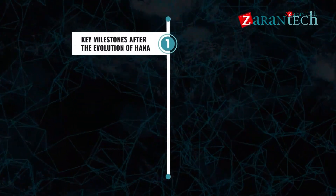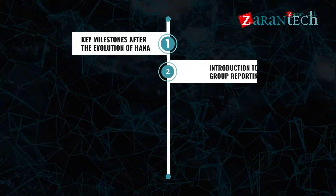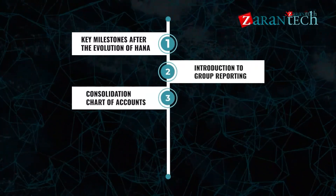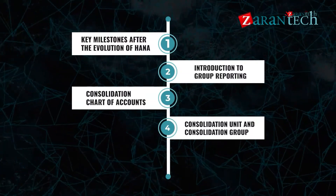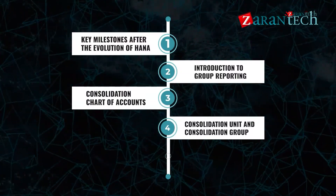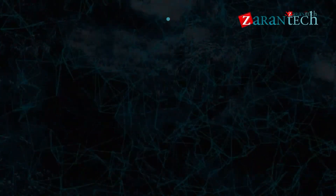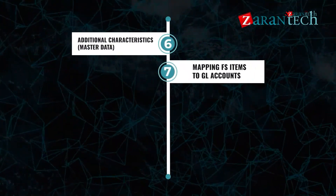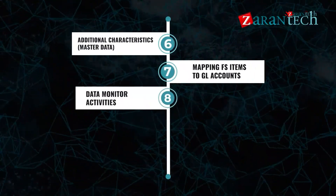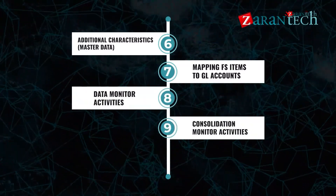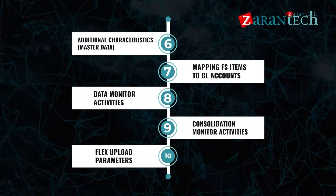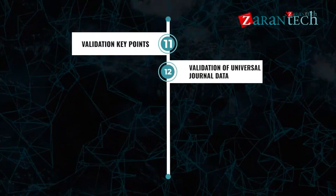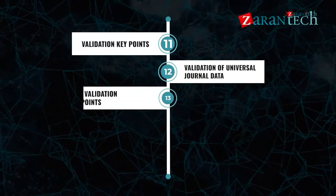Key milestones after the evolution of HANA, Introduction to Group Reporting, Consolidation Charts of Accounts, Consolidation Unit and Consolidation Group, Breakdown Category, Additional Characteristics, Master Data Mapping, FS Item, GL Accounts, Data Monitor Activities, Consolidation Monitor Activities, Flex Upload Parameters, Validation Key Points, Validation of Universal Journal Data.